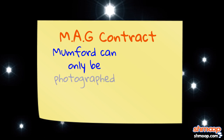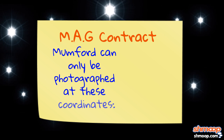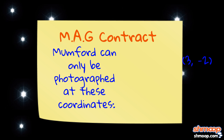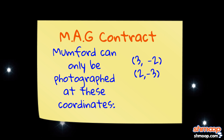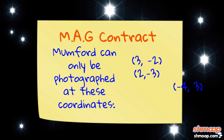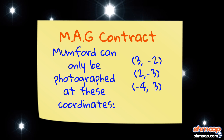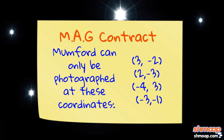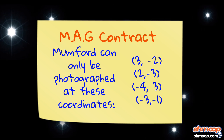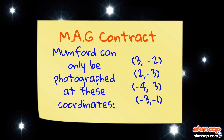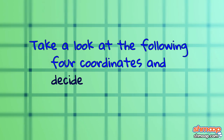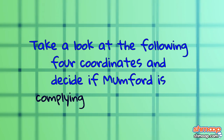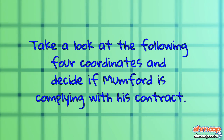Mumford can only be photographed at these coordinates: (3, -2), (2, -3), (-4, 3), and (-3, -1). Take a look at the following four coordinates and decide if Mumford is complying with his contract.